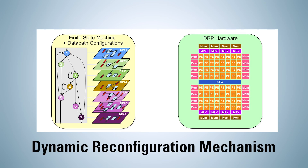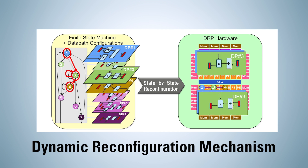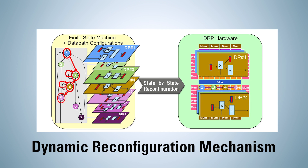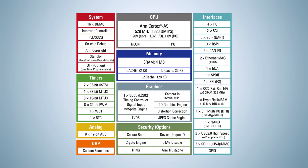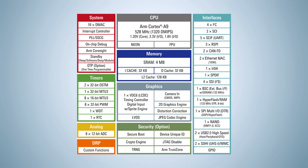The DRP comprises an array of reconfigurable processing elements coupled to a dedicated state transition controller. By means of time-domain multiplexing — that is, rapidly switching between multiple sets of configuration data or contexts — the modestly-sized DRP silicon is spatially expanded to implement deep data path structures. DRP technology executes complex algorithms more than 10 times faster than is possible by the ARM Cortex-A9 Core executing sequential code.